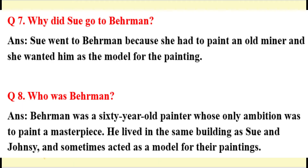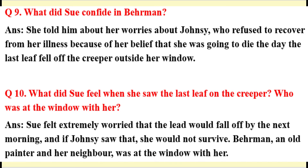Question 7: Why did Sue go to Behrman? Answer: Sue went to Behrman because she had to paint an old miner and she wanted him as the model for the painting. Question 8: Who was Behrman? Answer: Behrman was a 60-year-old painter whose only ambition was to paint a masterpiece. He lived in the same building as Sue and Johnsy, and sometimes acted as a model for paintings.